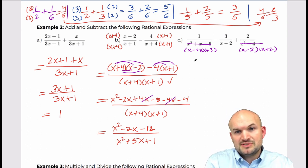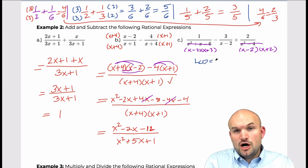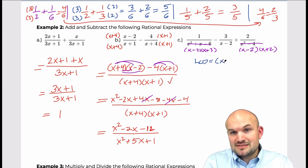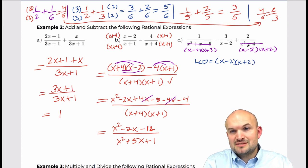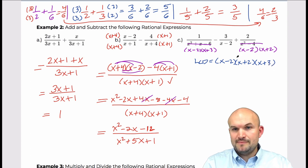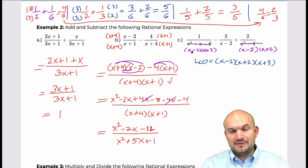Now we look at what they have in common and what they don't. For the LCD: they all need x minus two. This one has x plus two — nothing else has x plus two, so they need x plus two. And they also need x plus three. So that is the LCD.